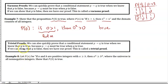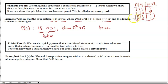A trivial proof is kind of the opposite. We can also quickly prove that a conditional statement 'if p then q' is true when we know that q is true. If the conclusion is true — whether 1 or 1 — then the conditional must always be true, no matter whether p is true or false. If you know your conclusion is true, then this is trivial; we don't need to do anything.